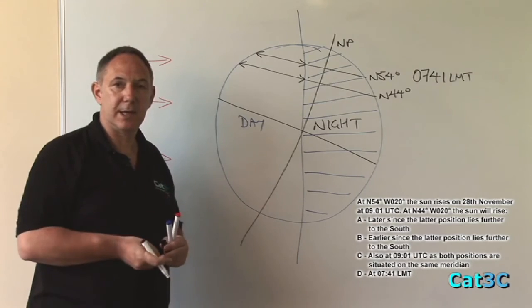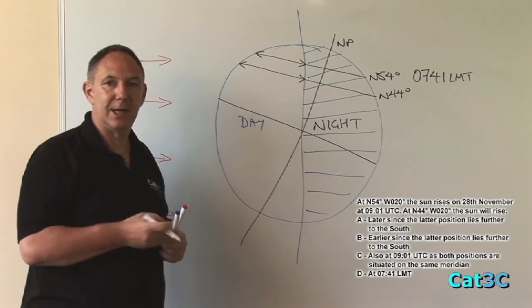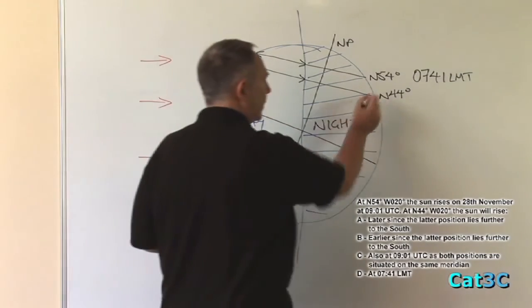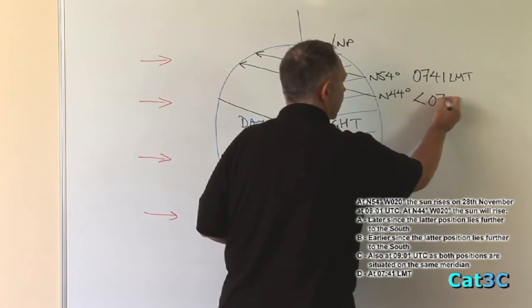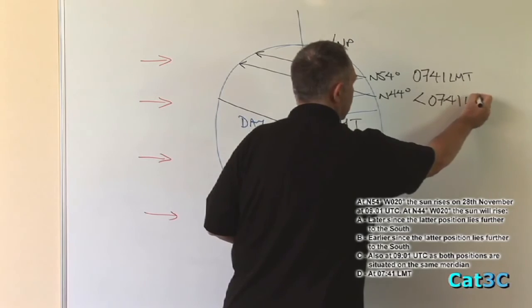If you have a longer day, you have an earlier sunrise and a later sunset. Therefore, the time of sunrise at north 44 must be earlier than 0741 local mean time.